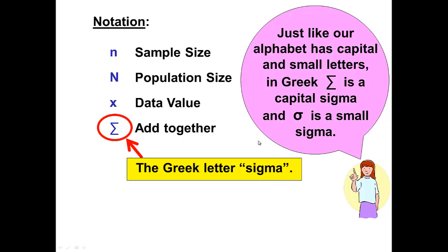And just like our alphabet, the Greek alphabet has capital letters and lowercase letters. In Greek, this symbol here that's shaped like an E is the capital Sigma and this symbol here is the lowercase or small Sigma. We do use both in probability and statistics.